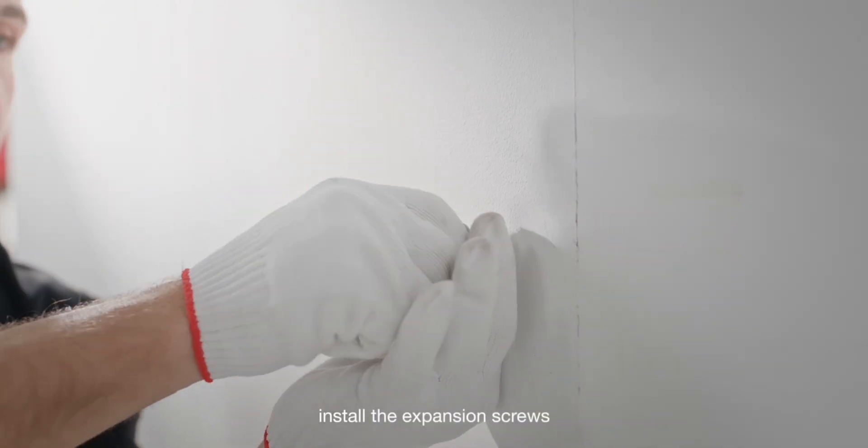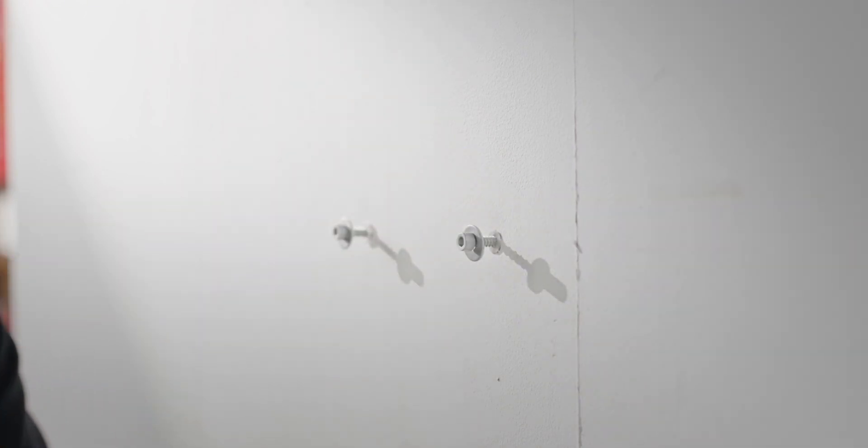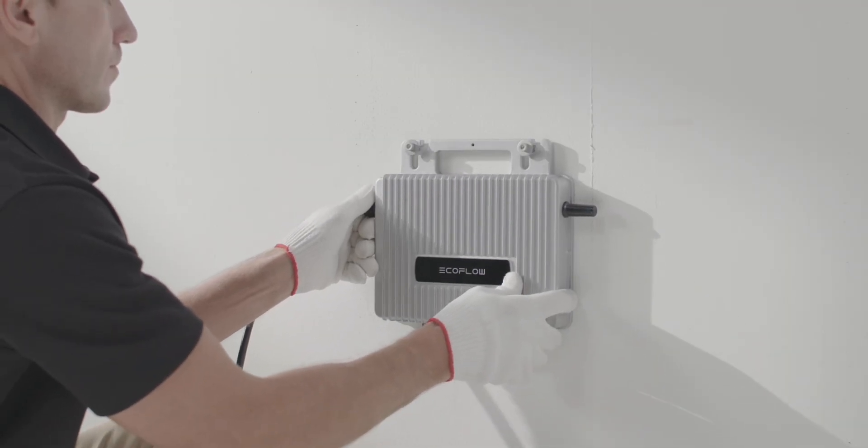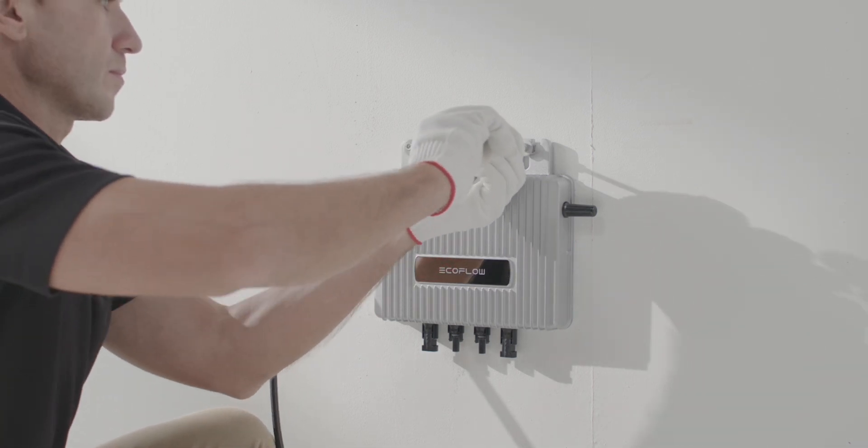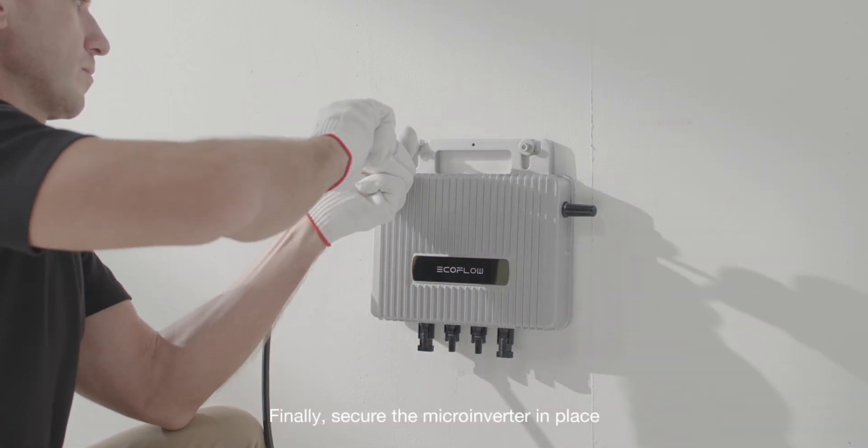Install the expansion screws. Then hang the microinverter on the wall. Finally, secure the microinverter in place.